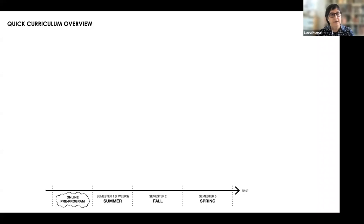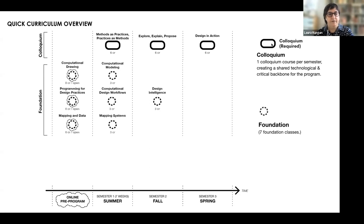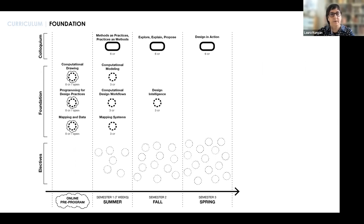What I'm going to do now is a very quick curriculum overview that goes from the online program — which is basically in June from whenever you accept your admission — through the summer intensive six-to-seven week curriculum, the full fall semester, the spring semester, and then you graduate. We start with a colloquium, then there's a foundation of seven courses, three of which are online and zero credit. The three colloquia and the four foundational seminars are the required parts of the curriculum.